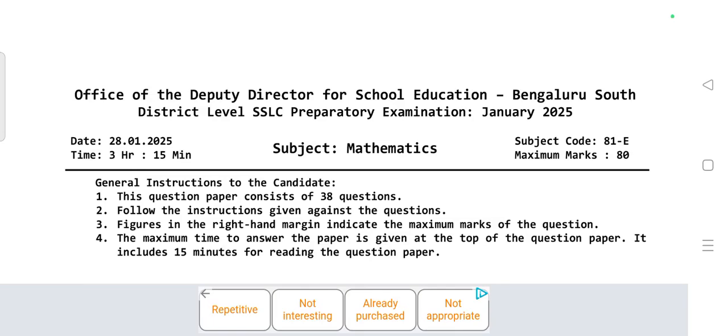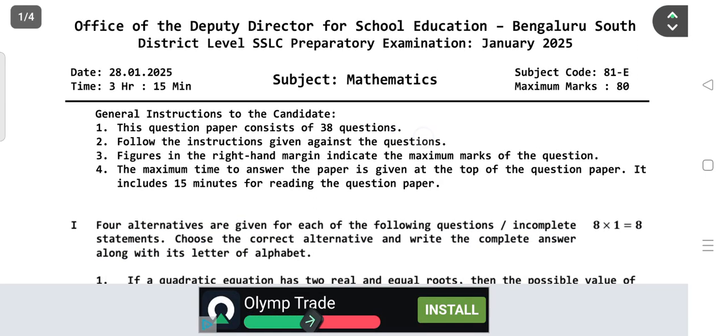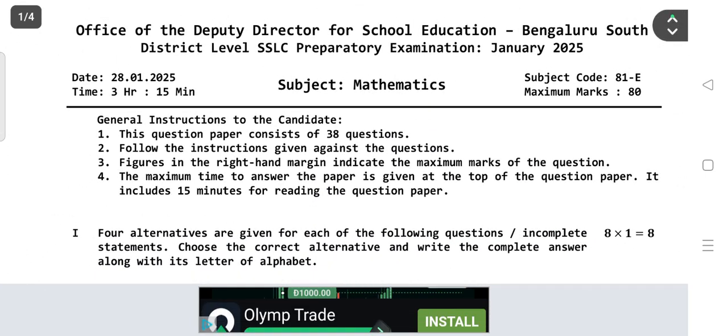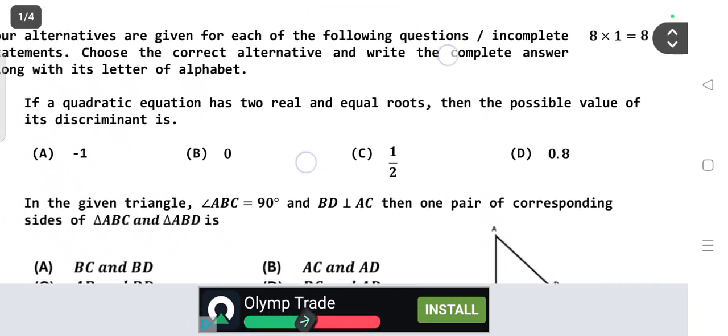Hello students, welcome back to my YouTube channel Supreme Learning Academy. This is a district level preparatory question paper for SSLC students, Bangalore South. Date is 28th January 2025, subject is Mathematics, subject code is 81-E. Four multiple choice questions, eight questions total, each carries one mark.